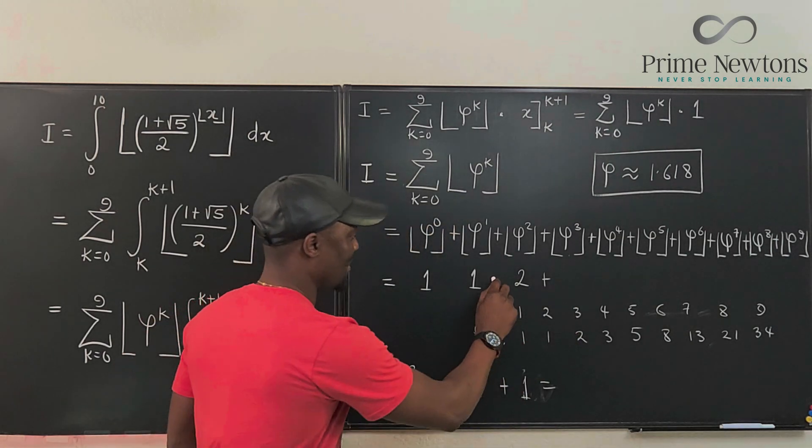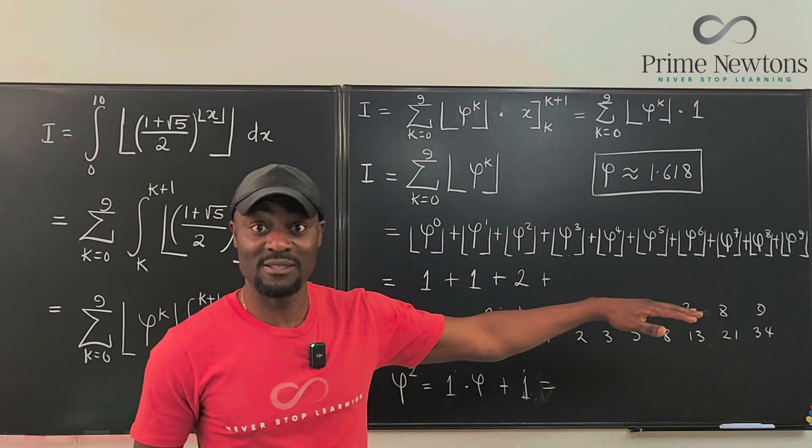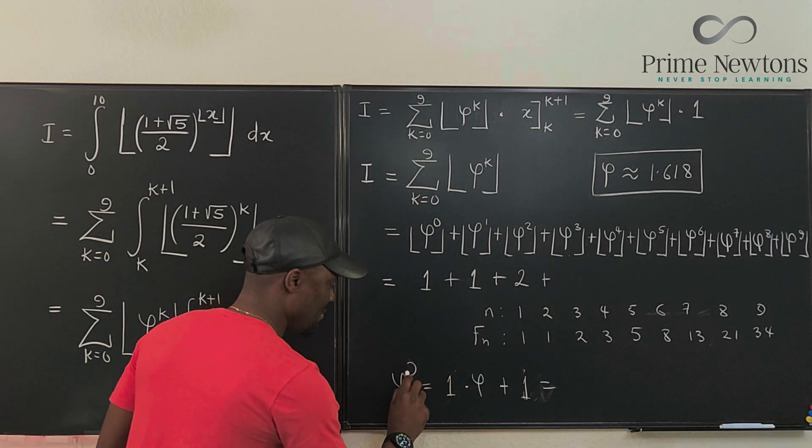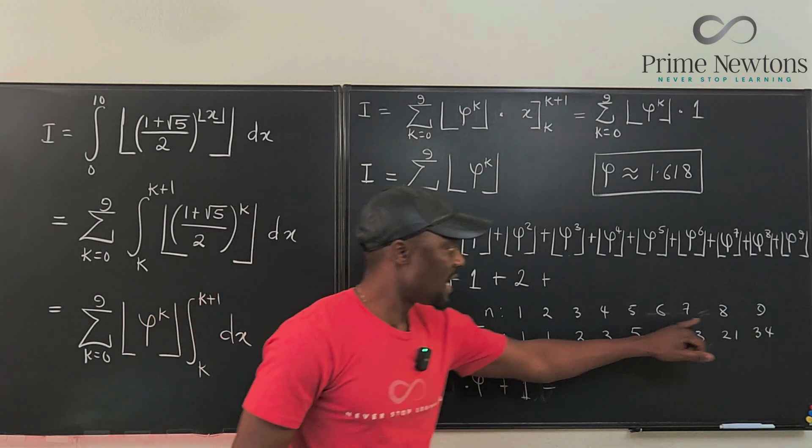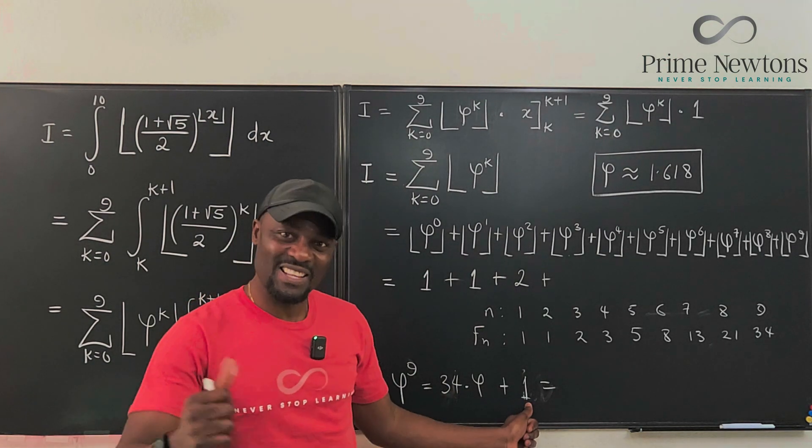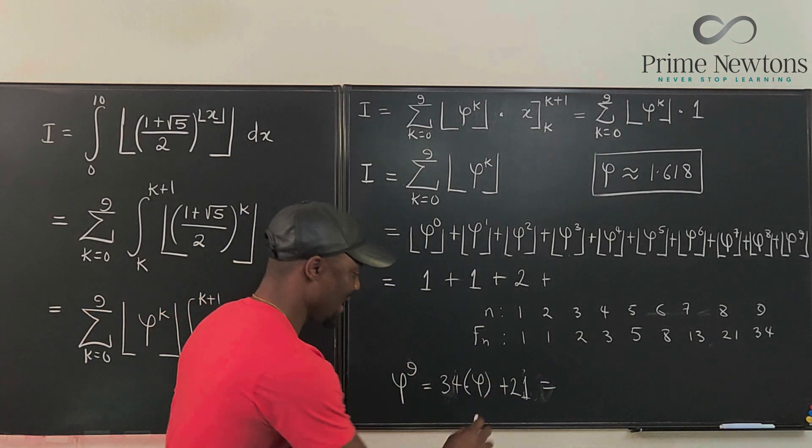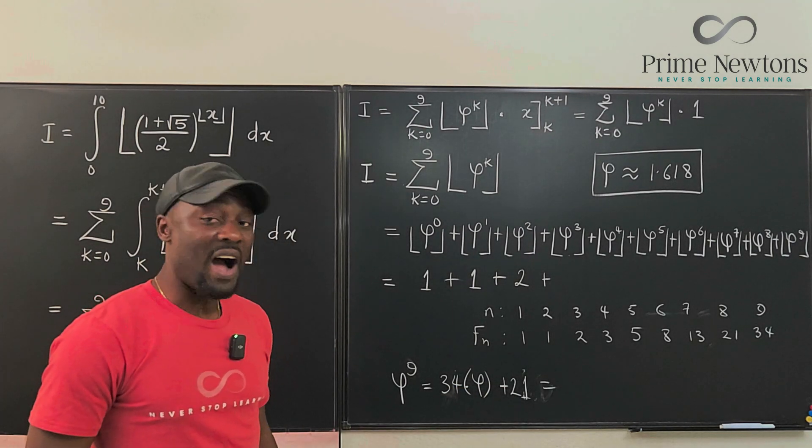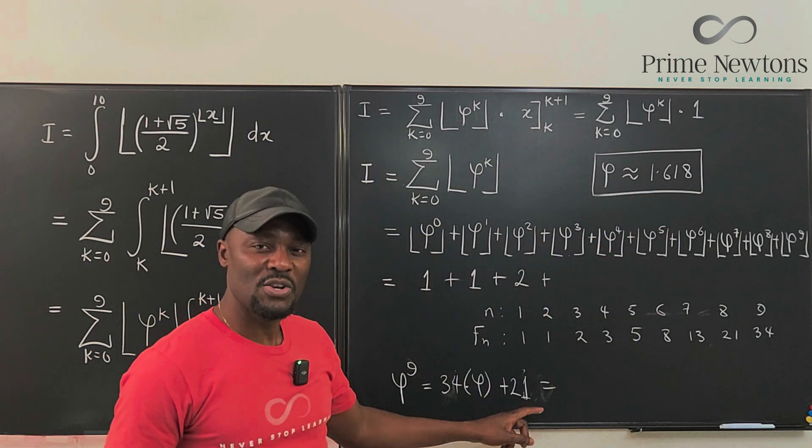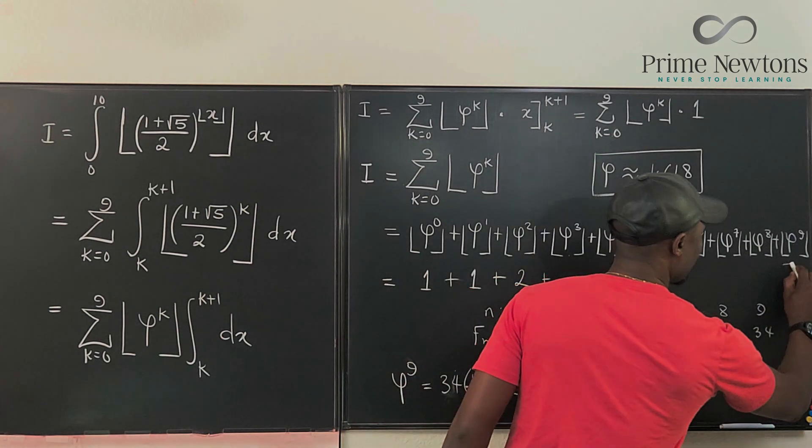I'm just going to try the last one. You can fill in the other ones. The last one is to the ninth power. So Phi to the ninth power is going to be the Fibonacci number when N equals nine, which is 34. So I'm going to be multiplying Phi by 34 and adding the term that is before 34, which is 21. If you multiply this by 34 and then add 21, you're going to be getting 76 point something. So the floor of it is 76.